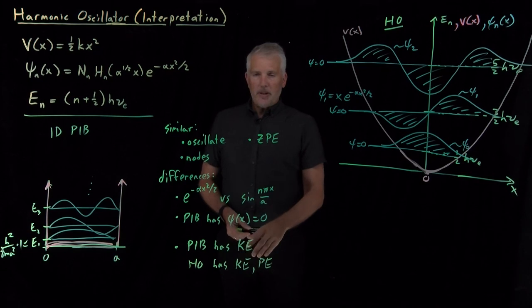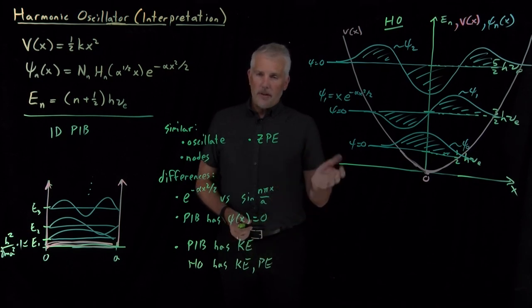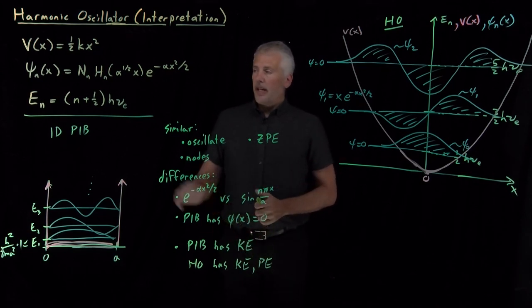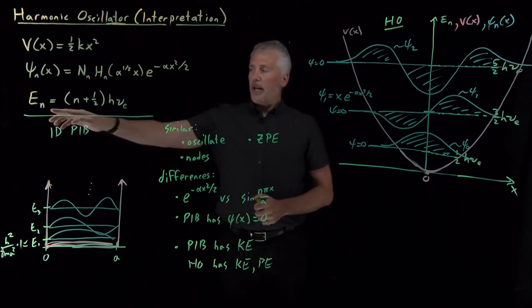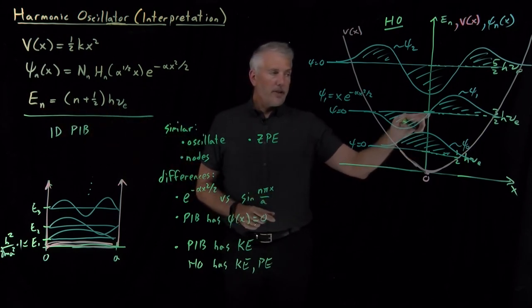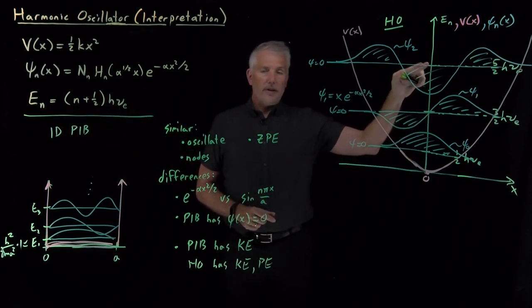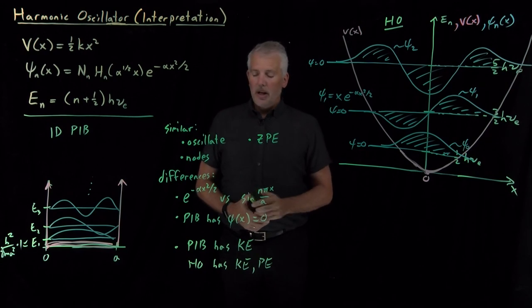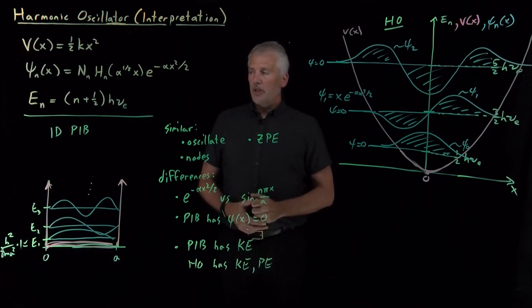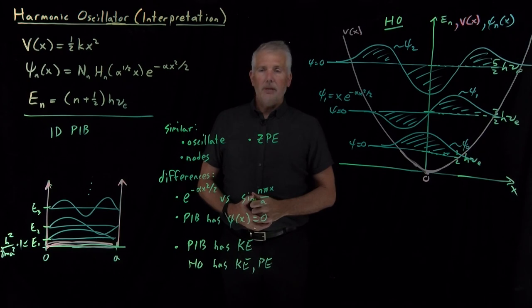Those thermodynamic properties we'll eventually get from the partition function from these models. Now that we have the energies of the harmonic oscillator energy levels — 1/2 hν, 3/2 hν, 5/2 hν, and so on — we have enough information to plug those into the equation and obtain the partition function for the harmonic oscillator. So that's what we'll do now.